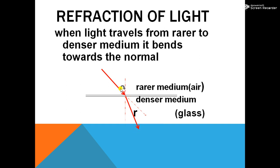The angle between the incident ray and the normal is called the angle of incidence I, and the angle between the refracted ray and the normal is called the angle of refraction R.